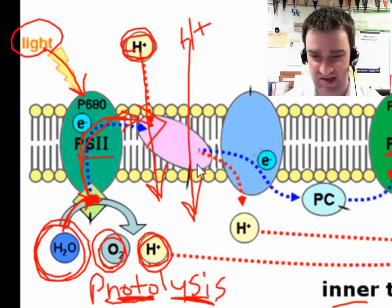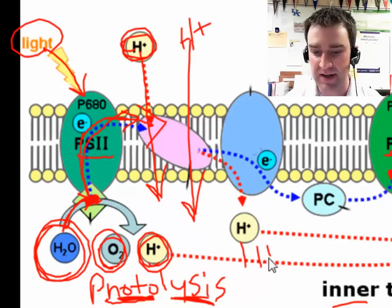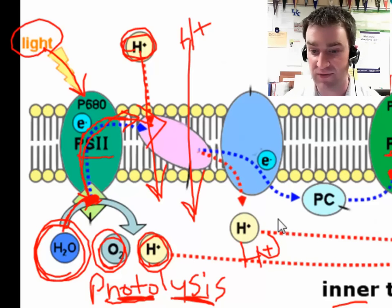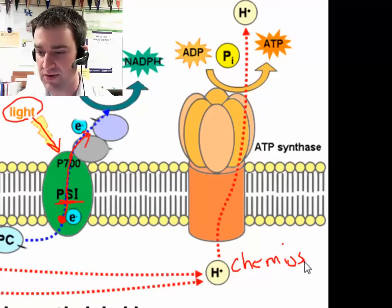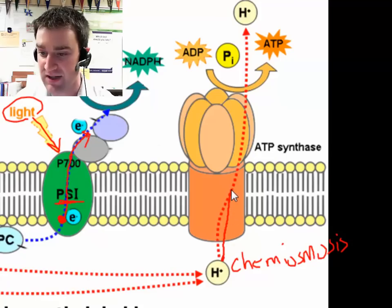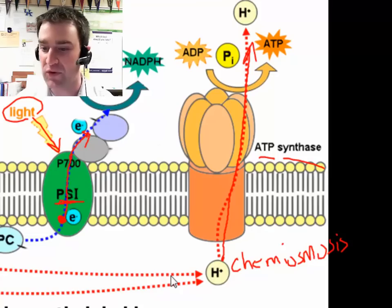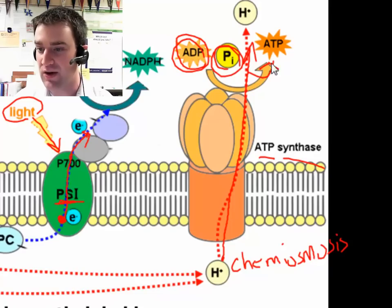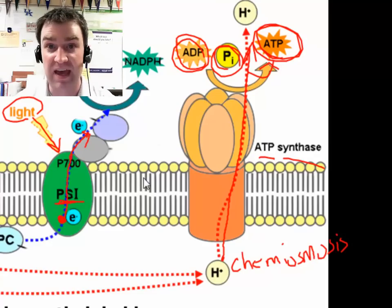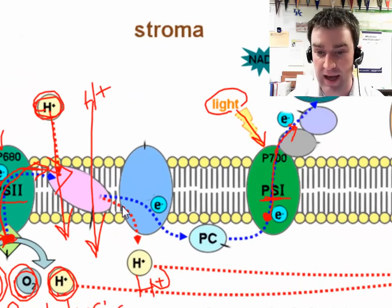Those H+, once they build up in concentration, can do the same thing we saw in respiration. Chemiosmosis is when those H+ ions — those protons — diffuse back from high to low concentration by going through ATP synthase. As they do so, that electrical current helps ATP synthase power the combination of ADP and phosphate to make new ATP. So we've made ATP — that was one of the goals of the light reactions.